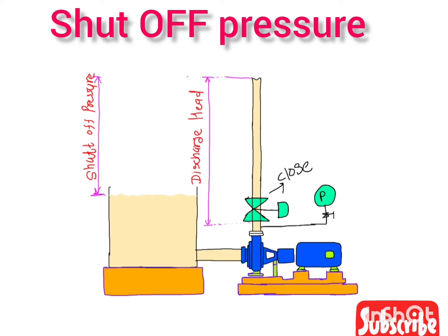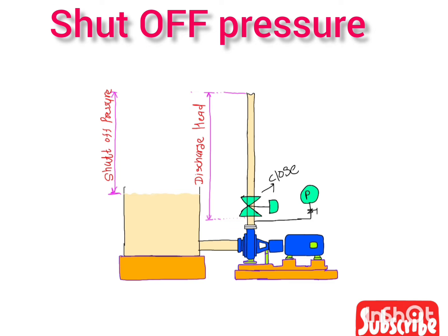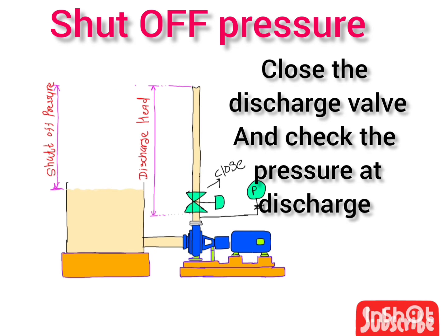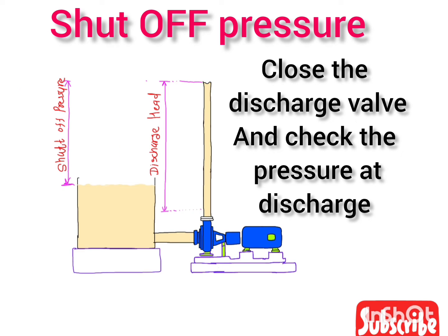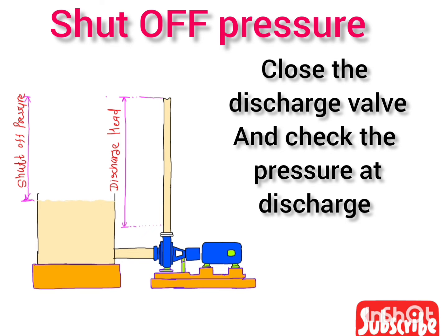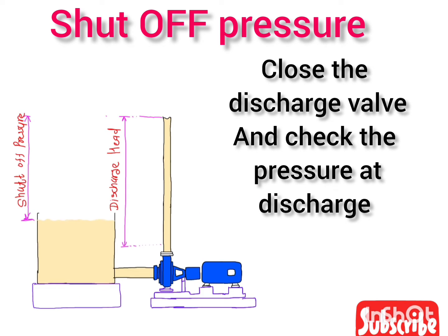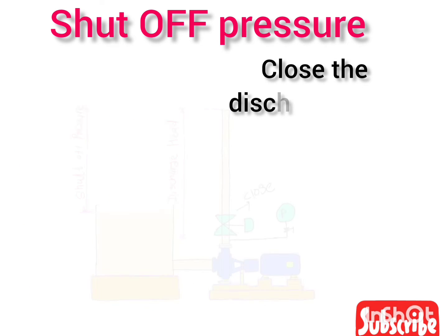If you want to know the shut-off pressure of your centrifugal pump, simply close the outlet discharge valve and observe the maximum pressure that the pump generates on the discharge side. That maximum pressure is your shut-off pressure.